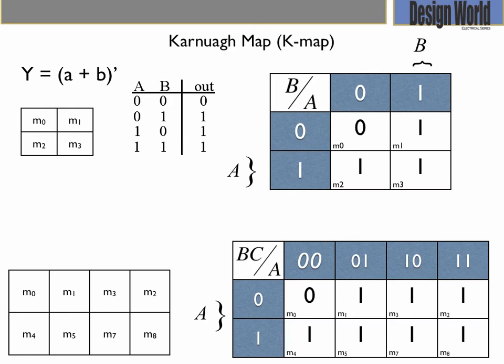Now, let's look at the 3 variable K map. When variable A equals 1 and variable B equals 0, 0, then the output is 0.